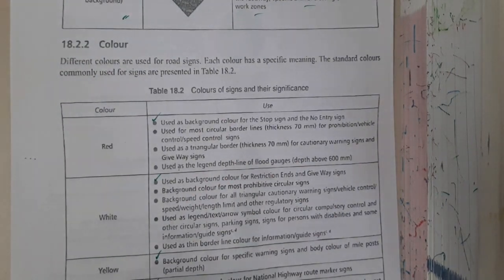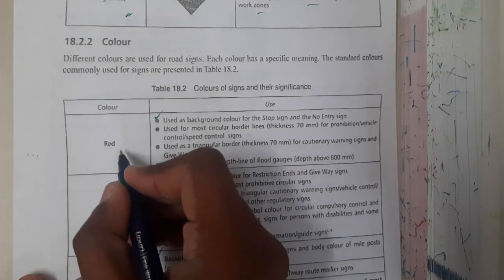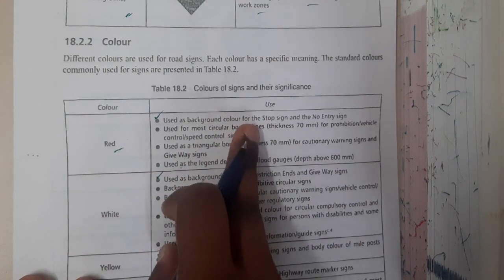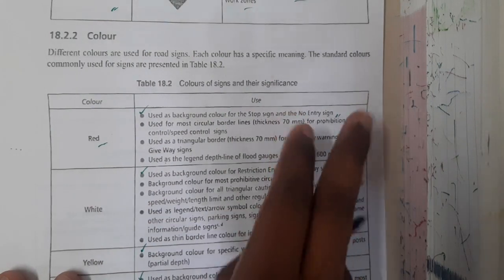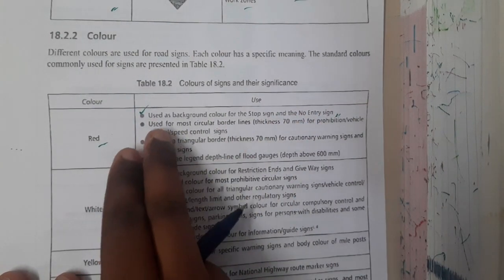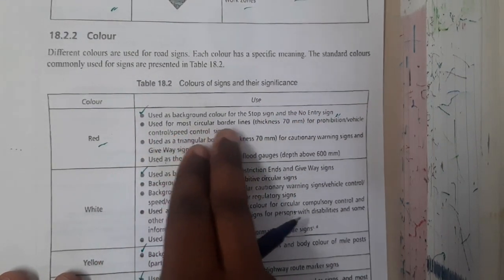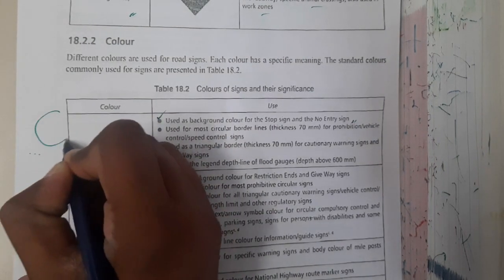Now let us move on to colors. Red color is used for the stop sign and no entry. It is used only for two reasons - stop sign and no entry. It is used for most circular borders.